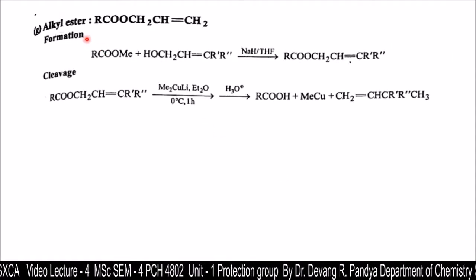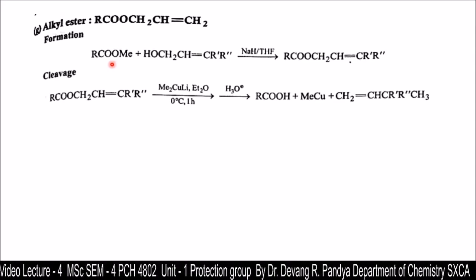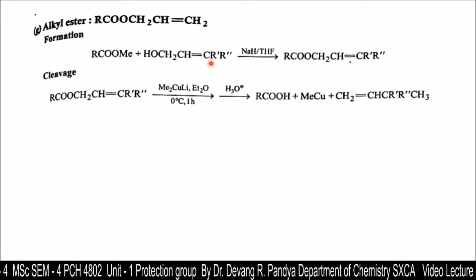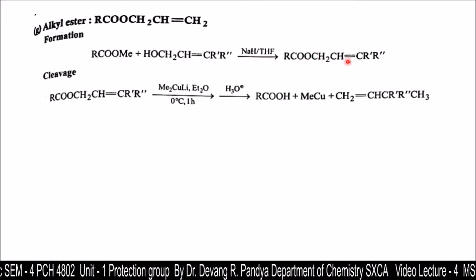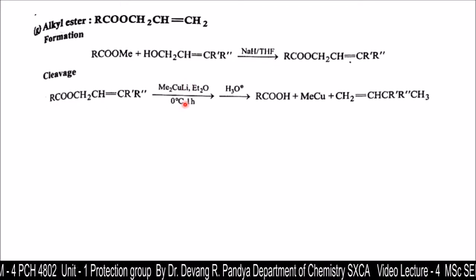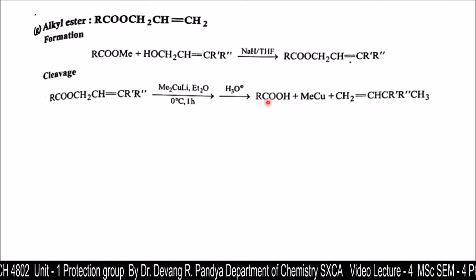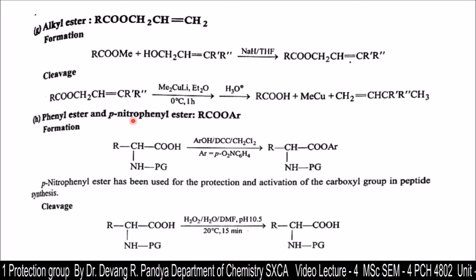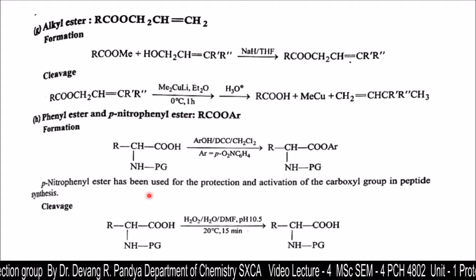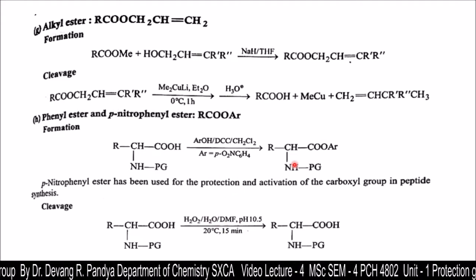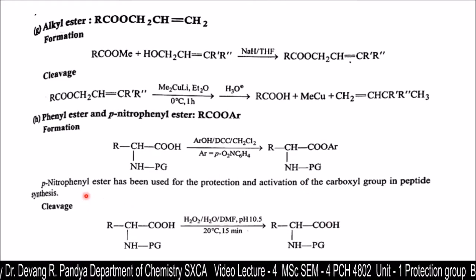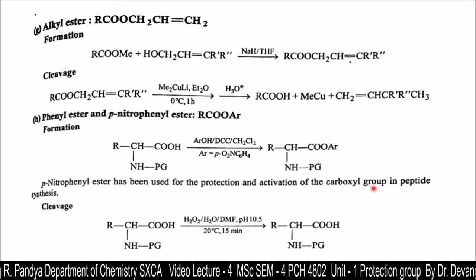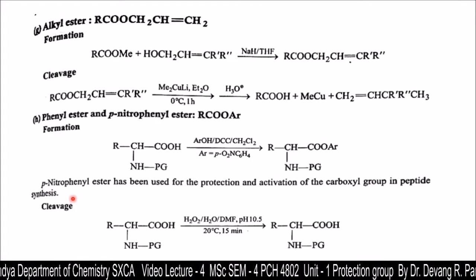Next is the alkyl ester. This shows the formation: methyl ester treated with an alkene gives the alkyl ester, and the cleavage gives back the carboxylic group — protection and deprotection in this fashion. Phenyl ester and p-nitrophenyl ester: this is the protection and deprotection under different reaction conditions. The p-nitrophenyl ester has been used for the protection and activation of the carboxylic group in peptide synthesis.